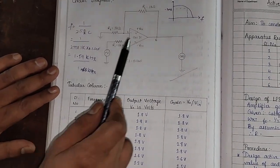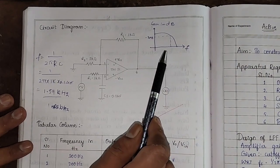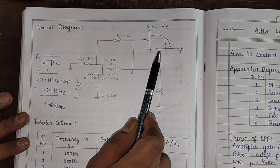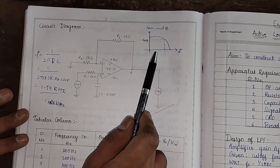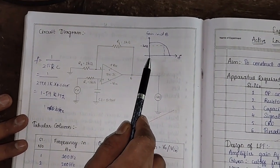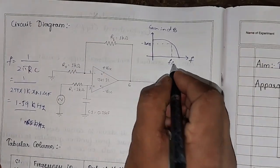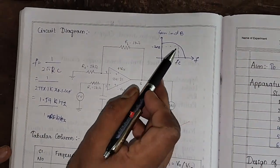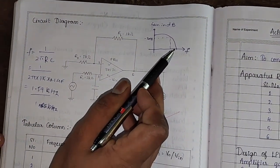This can also be observed with the help of the graph. This is the graph, or frequency response, of the low pass filter. Once we reach the cutoff frequency, the output voltage goes on reducing.